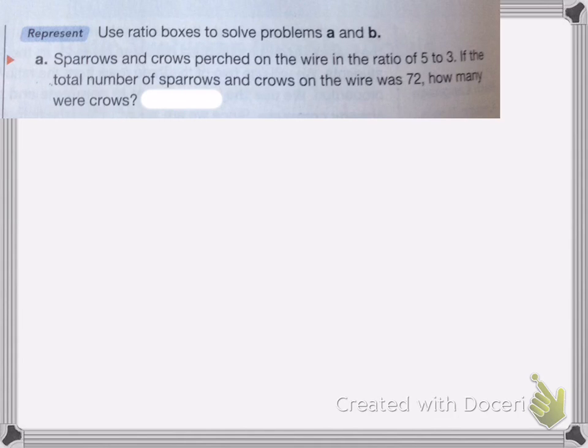In this next one, we have sparrows and crows are perched on the wire in the ratio of 5 to 3. If the total number of sparrows and crows on the wire was 72, how many were crows?